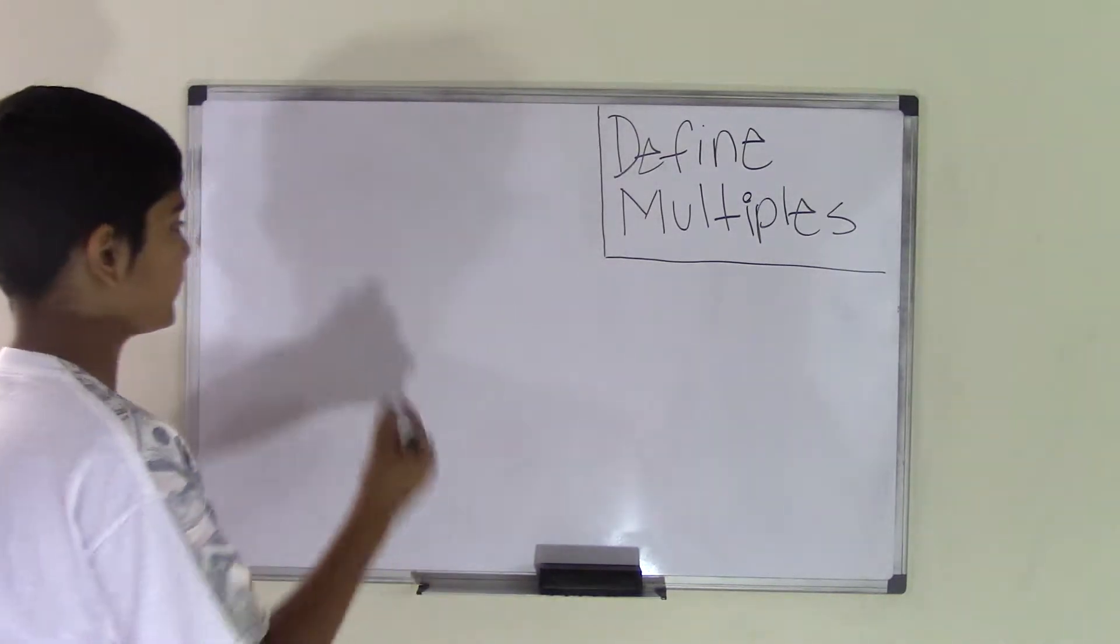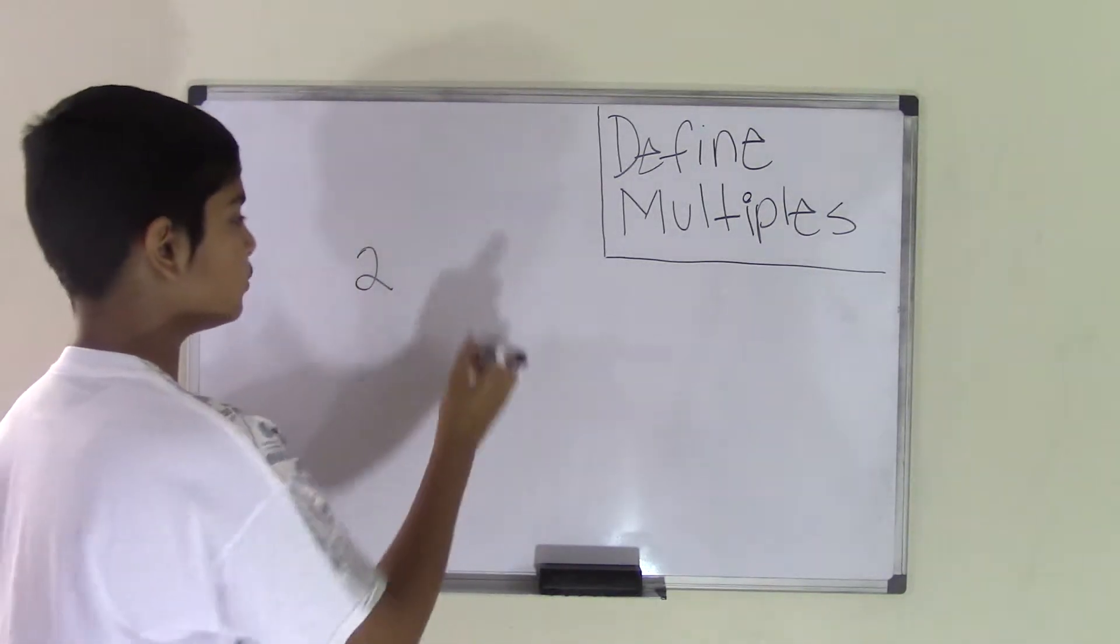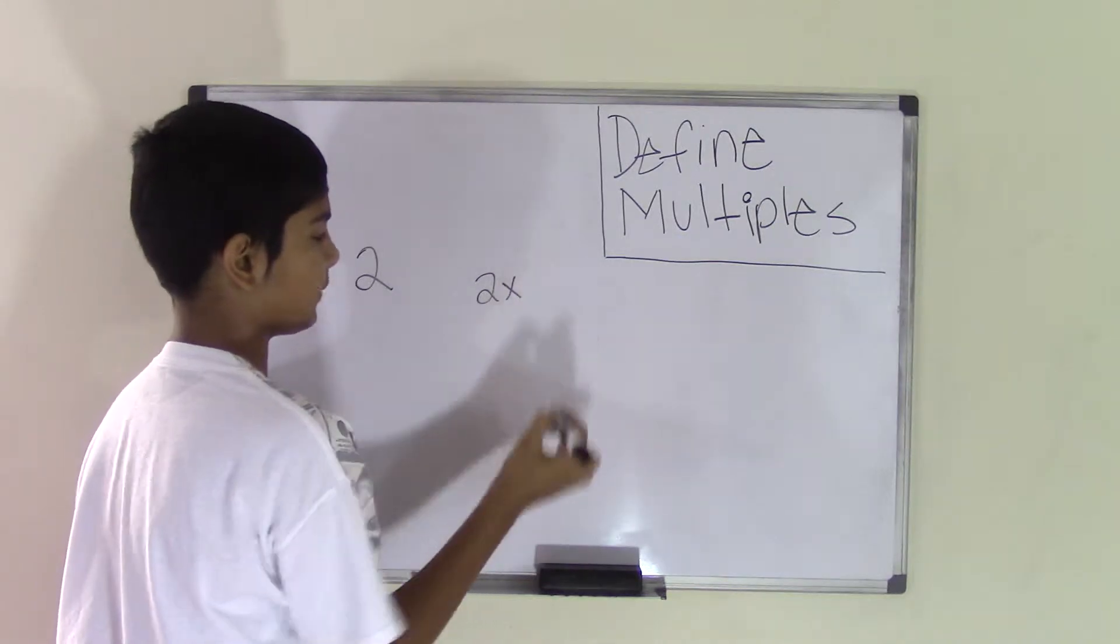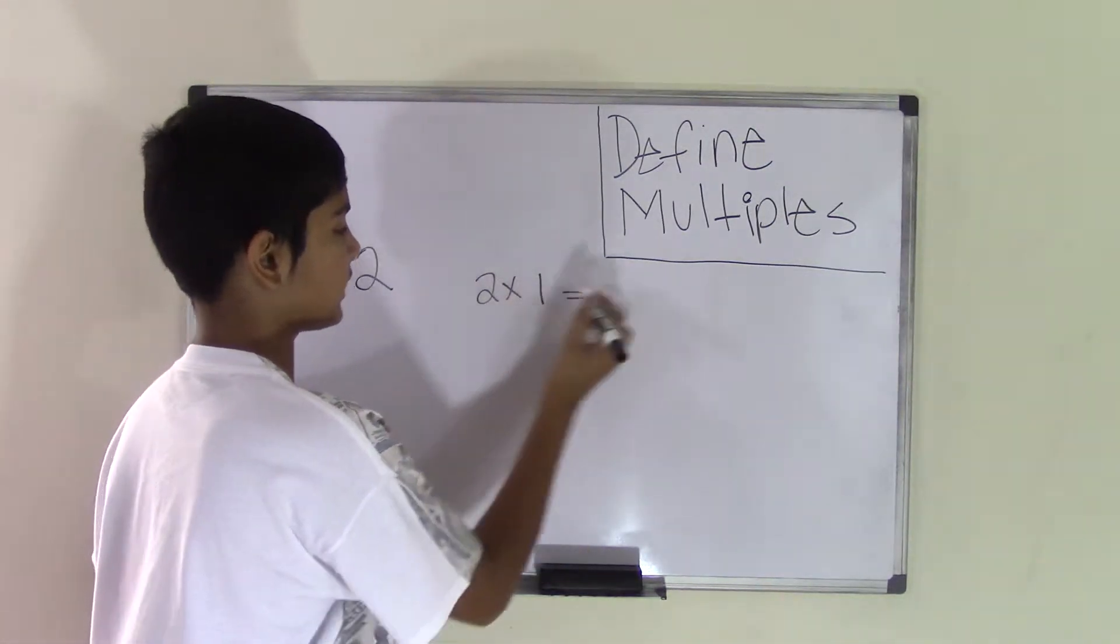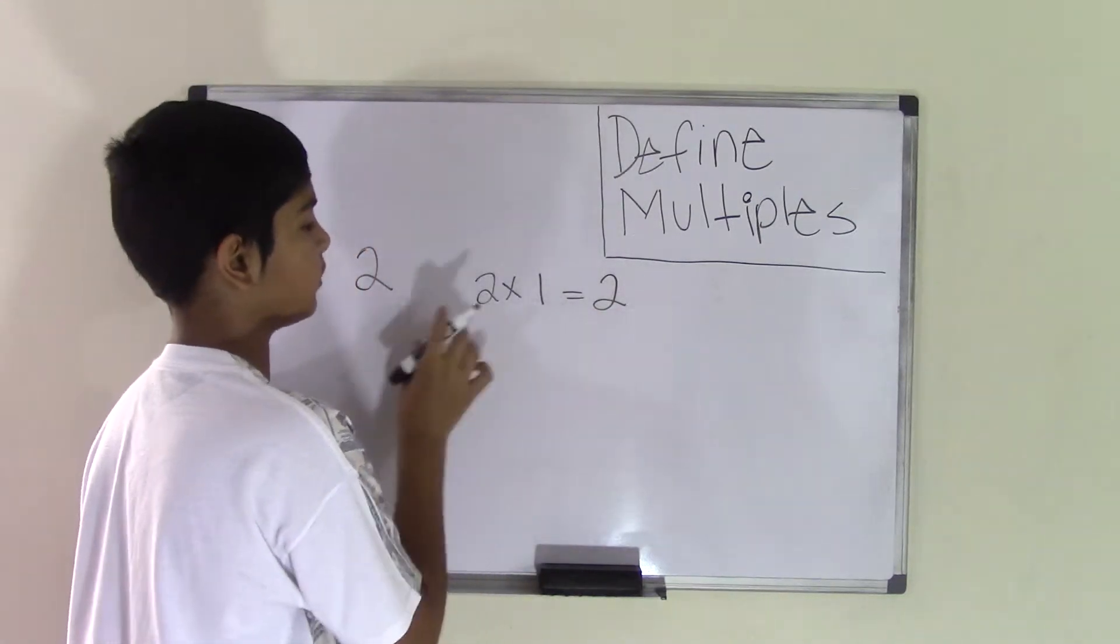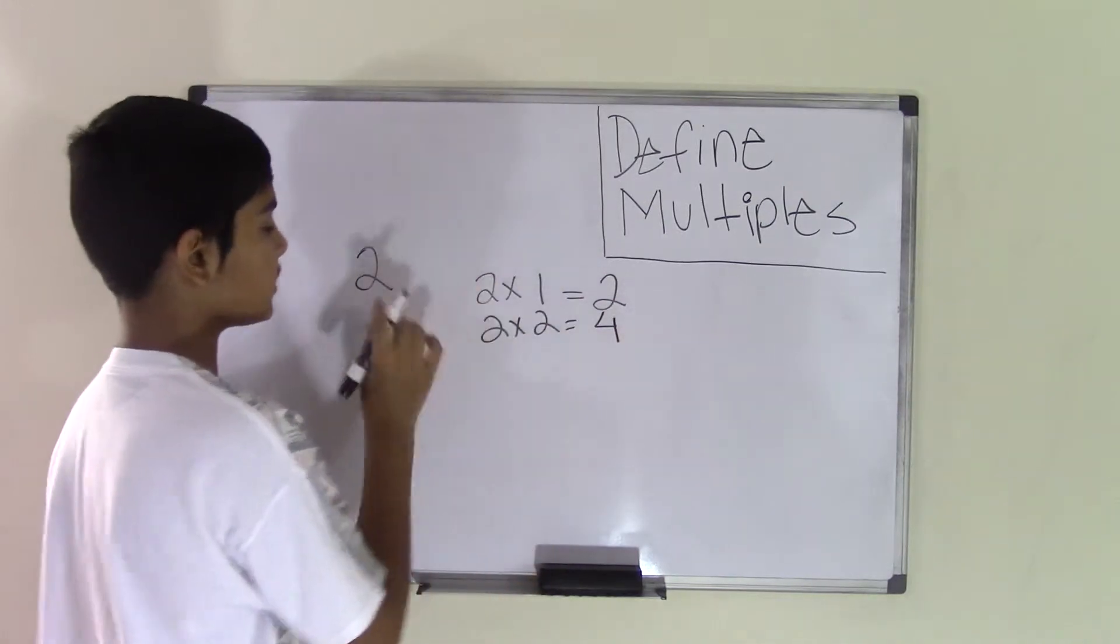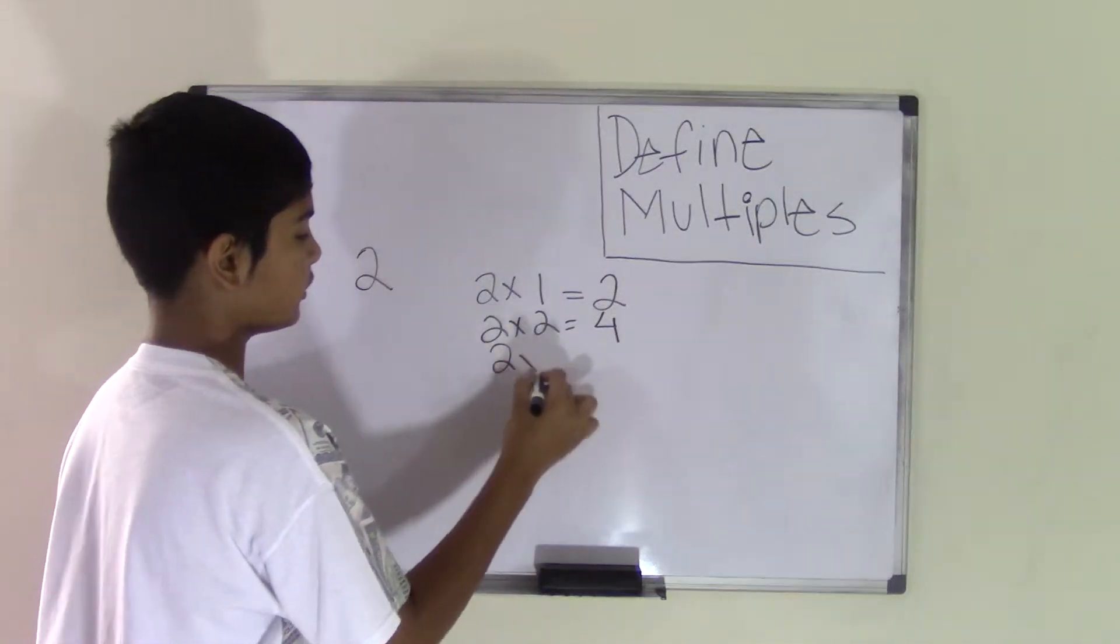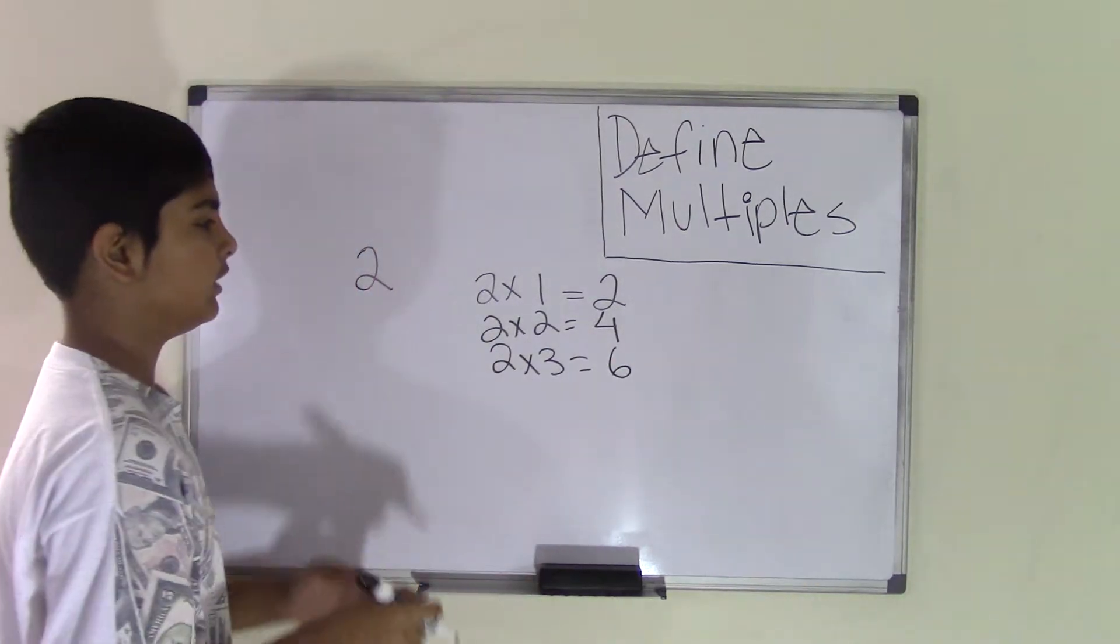So let's take the number 2. The multiples for the number would be 2 multiplied by 1 and so on. So 2 times 1 is 2 and 2 is a multiple of 2. 2 times 2 is 4 and 4 is a multiple of 2. 2 times 3 is 6 and 6 is a multiple of 2.